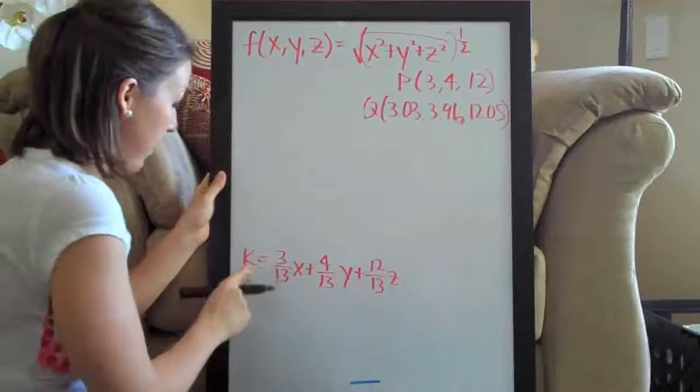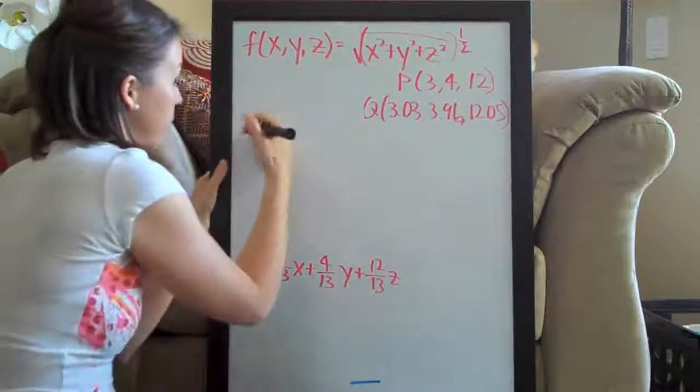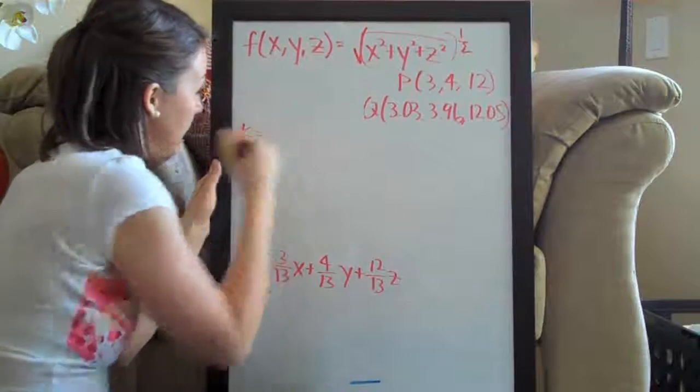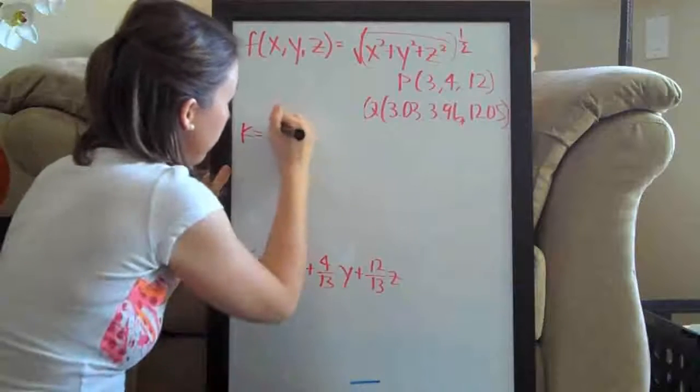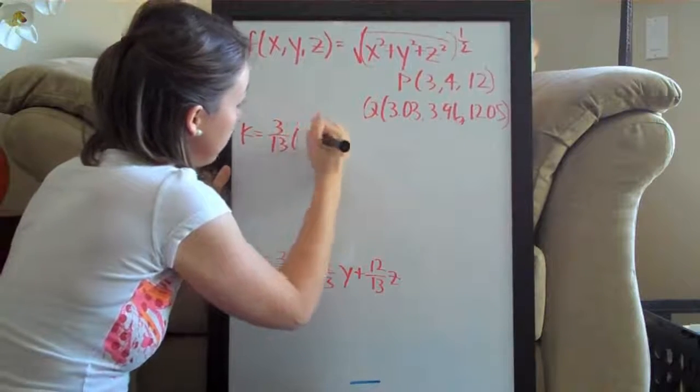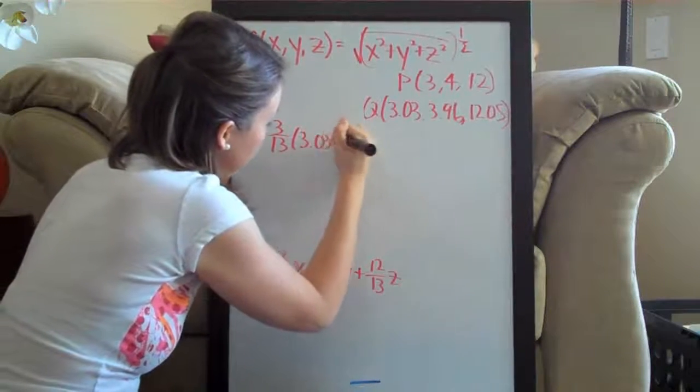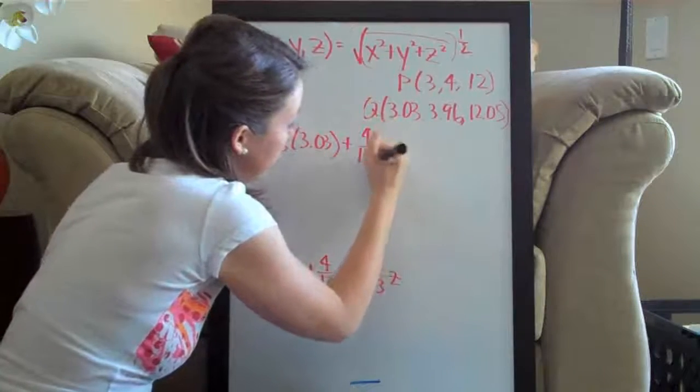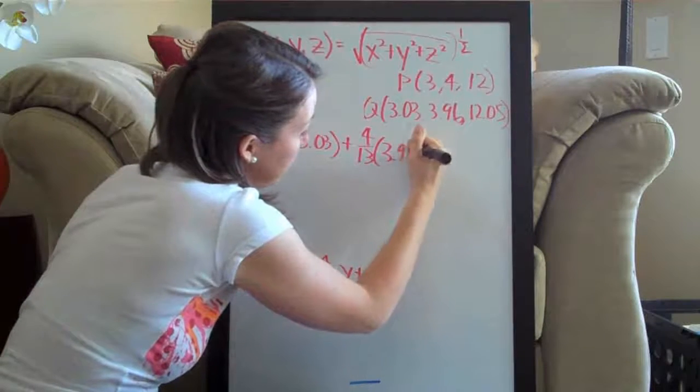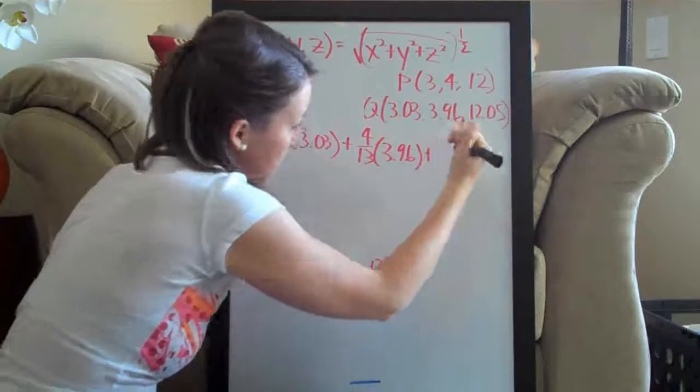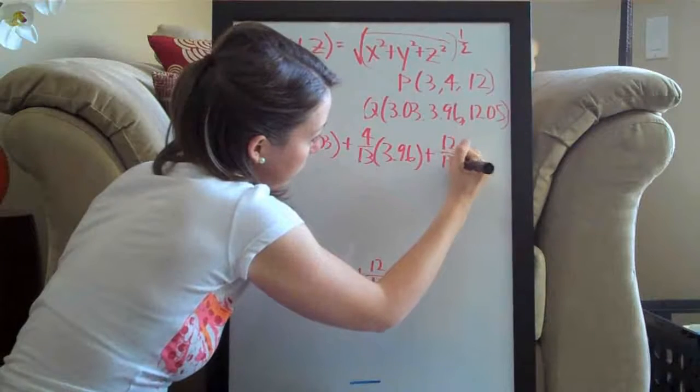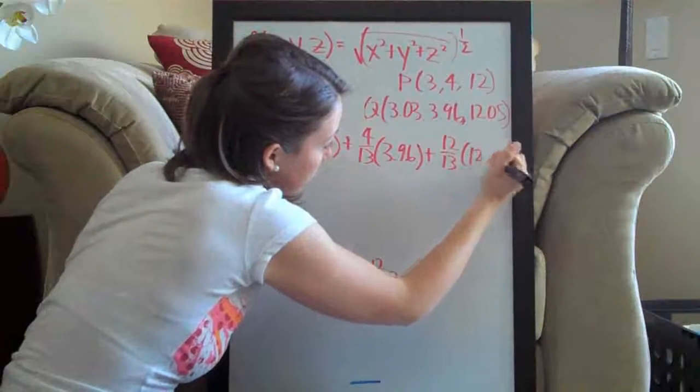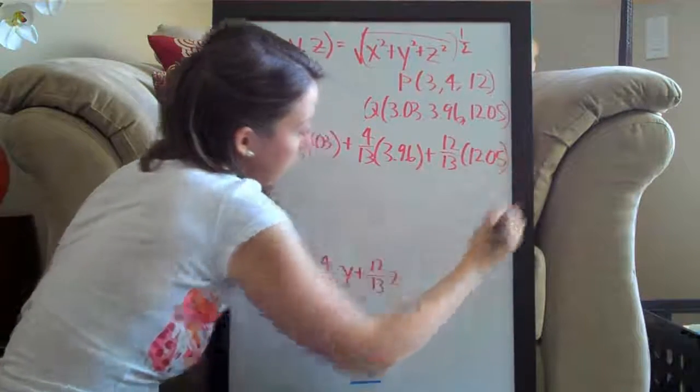So we plug in the point. We're going to end up solving here for k. So k equals three over thirteen times three point zero three plus four over thirteen times three point nine six plus twelve over thirteen times twelve point zero five.